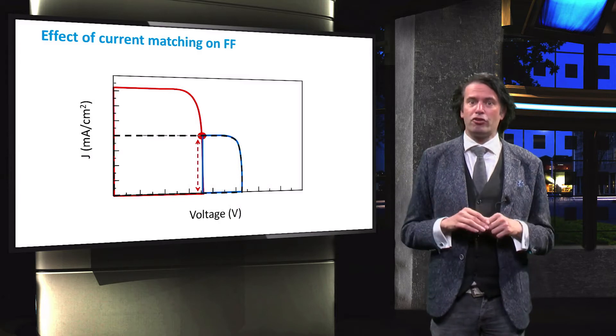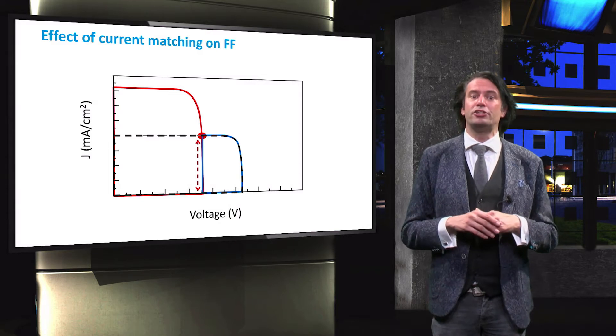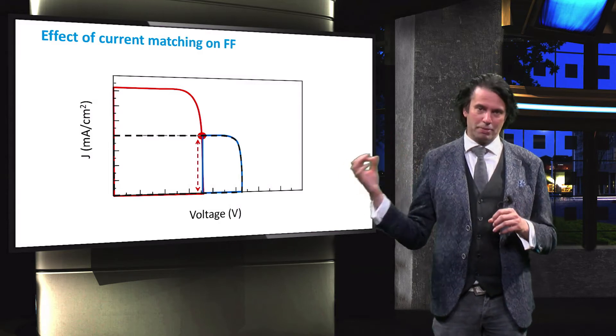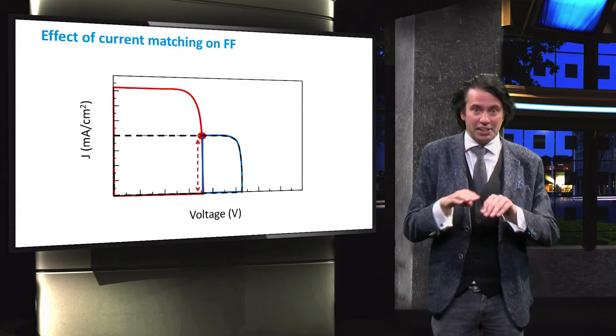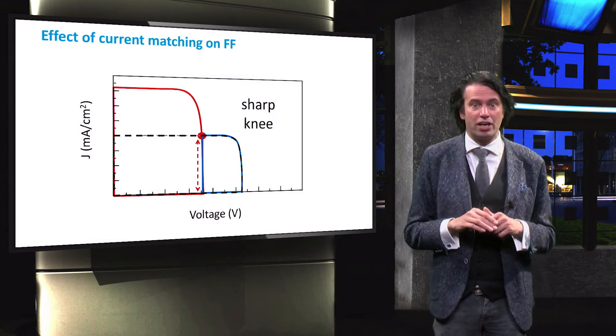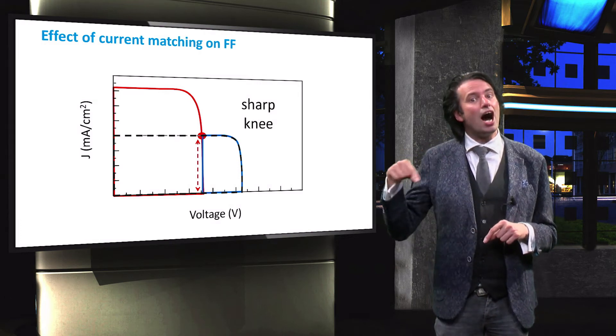The squareness of the JV curve, or in other words the fill factor, is mainly determined by this limiting junction. Again, the knee around the maximum power point is relatively sharp, resulting in high fill factors.